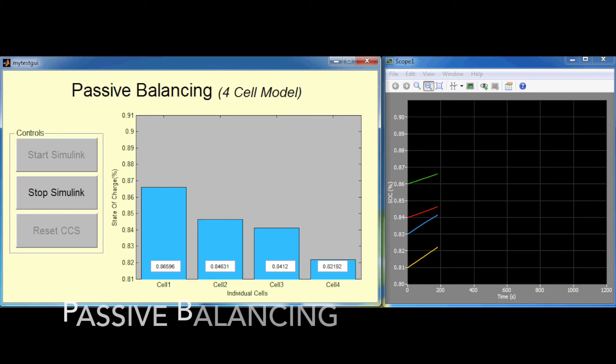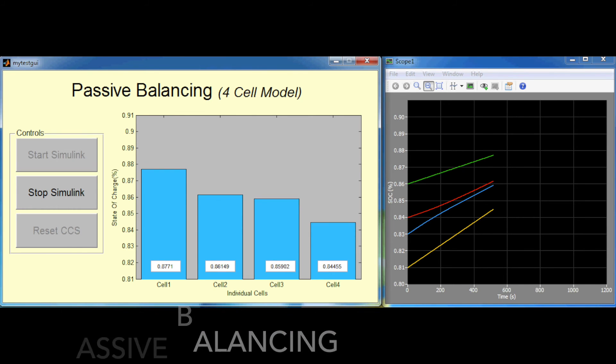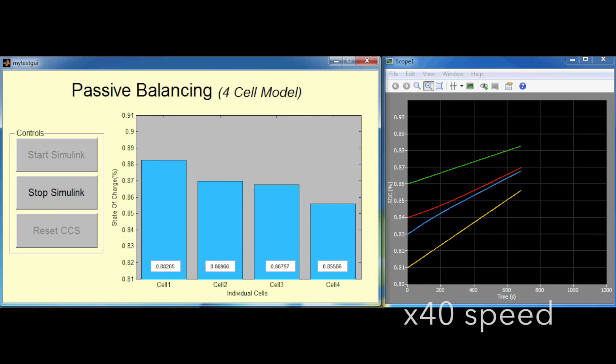In passive balancing, the cell with the highest SOC is discharged into the load resistor until the SOC of the other cells catch up to it. At such a point, the SOC of the cells converge to about the same value and the cells can then be fully charged to their rated capacity. This topology is very simple to implement in terms of control logic, but its downfall is that it dissipates energy.